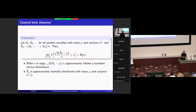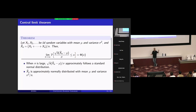Let me check this theorem. We consider a sequence of IID random variables. IID means independent and identically distributed. Independent means those random variables have nothing to do with each other — no matter what value X1 takes, it won't affect the distribution of X2 or X3. Identically distributed means they have the same distribution, so they should have the same expected value and the same variance.